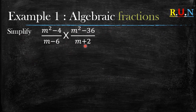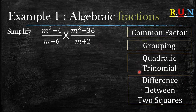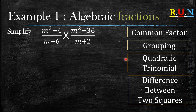Example number one: algebraic fractions. What do we do when we are told to simplify something like this that has a multiplication sign? If you've watched the previous video, it all comes down to these four headings: factorize out a common factor, factorize by grouping, quadratic trinomials, and difference between two squares. If you are not familiar with these four, I will be linking videos for each of them in the description below.